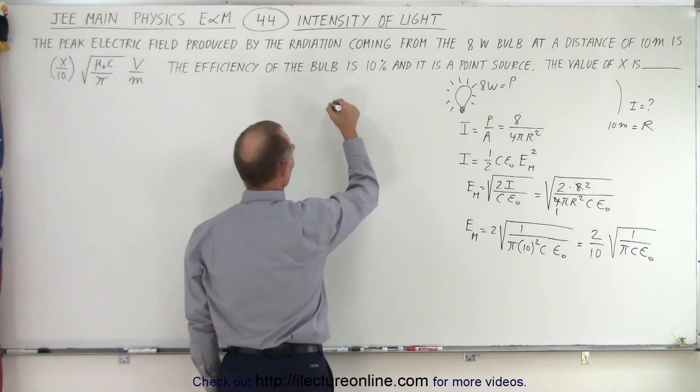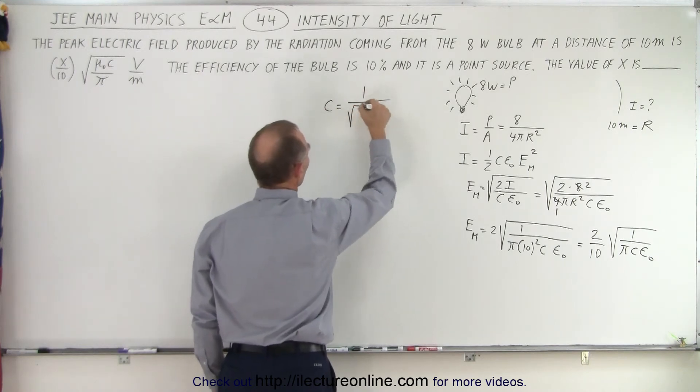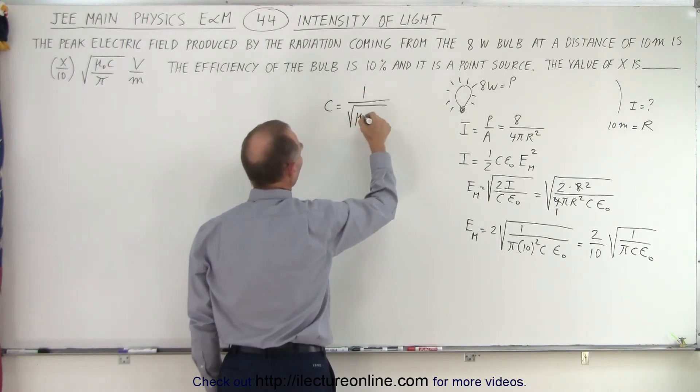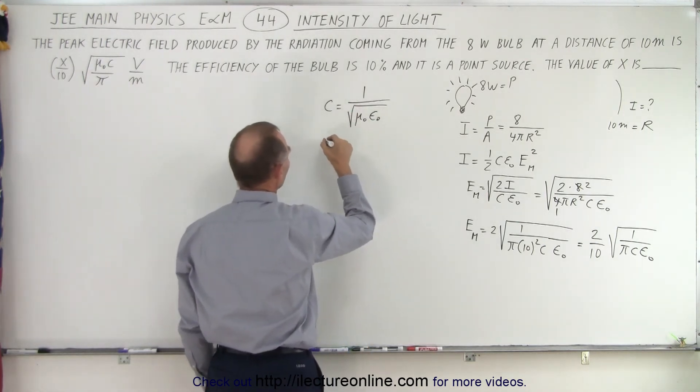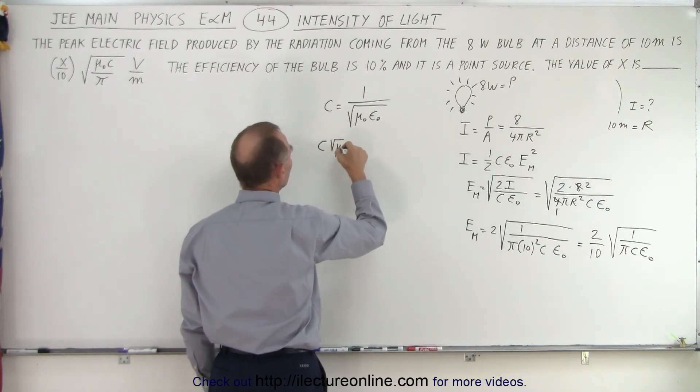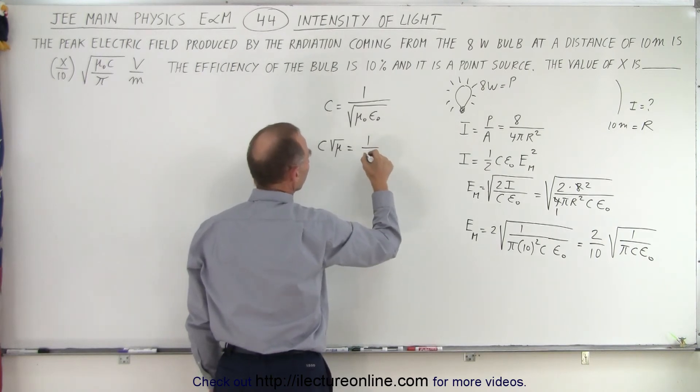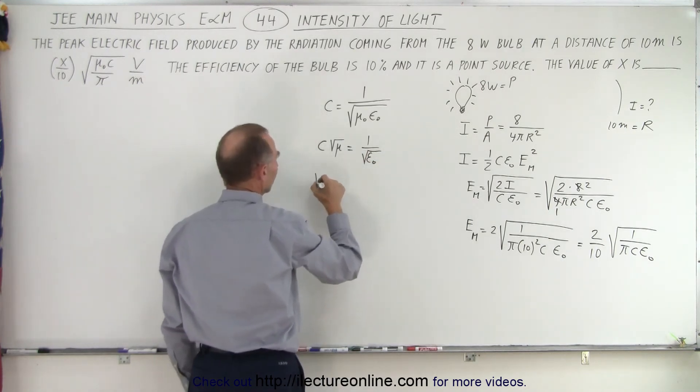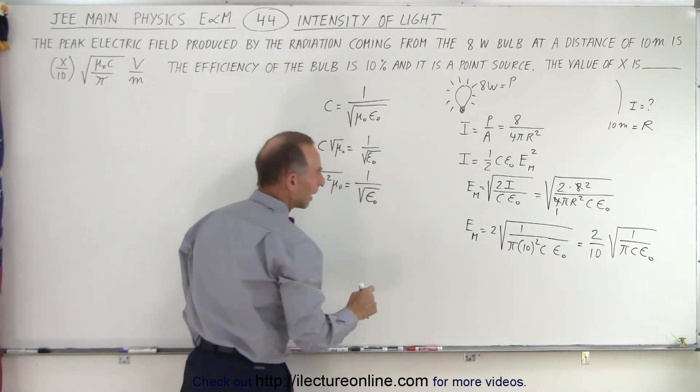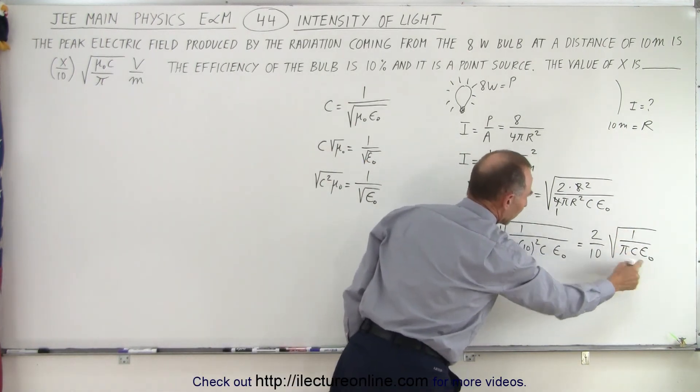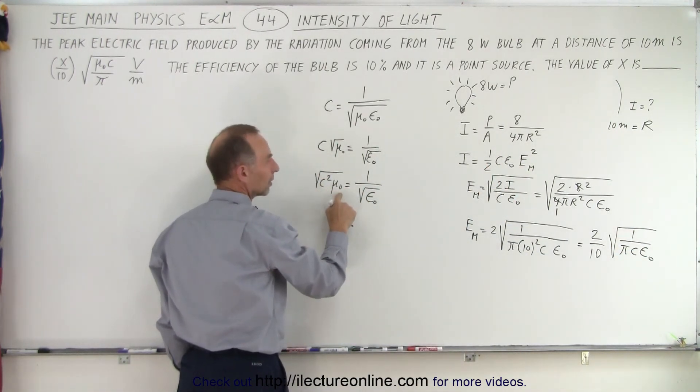That the speed of light is equal to 1 over the square root of mu sub naught times epsilon sub naught. Which means that 1 over epsilon sub naught can be written as c times the square root of mu is equal to 1 over the square root of epsilon sub naught, and I can write this as the square root of c squared mu sub naught is equal to 1 over the square root of epsilon sub naught. And notice I have 1 over epsilon sub naught, which can be replaced by c squared times mu.